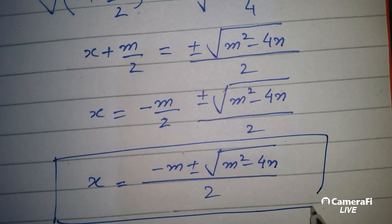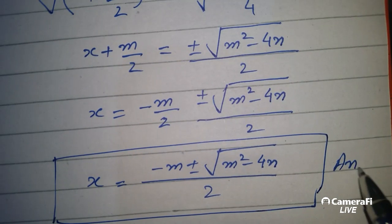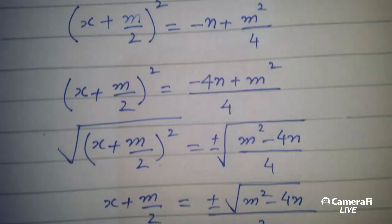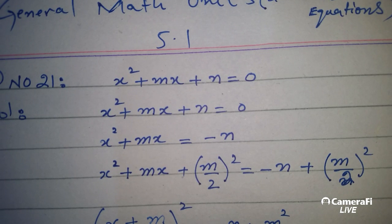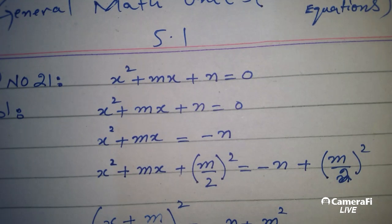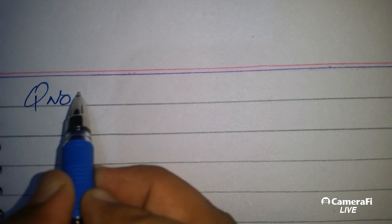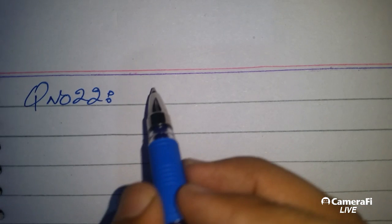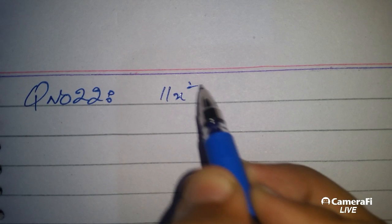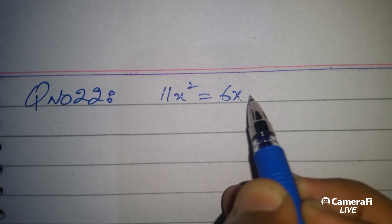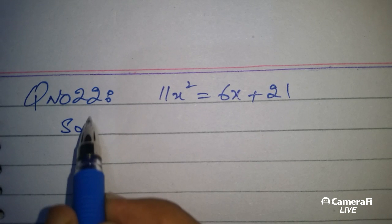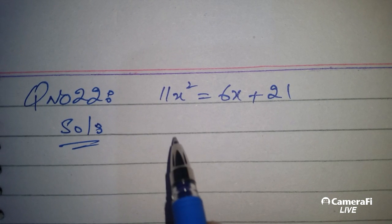The first question is now complete. Next question number: 11x² + 6x + 21. Solve by completing the square.